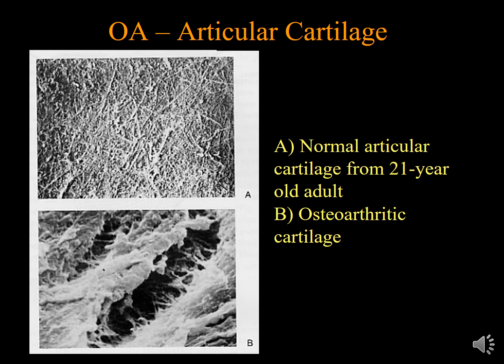Under electron microscopy, the appearance of normal articular cartilage shows a normal protein network interlocking with each other. This is very different from Osteoarthritis, where the cartilage is replaced by bone and there are many defects in the articular cartilage — a striking difference between normal articular cartilage and Osteoarthritis under electron microscopy.